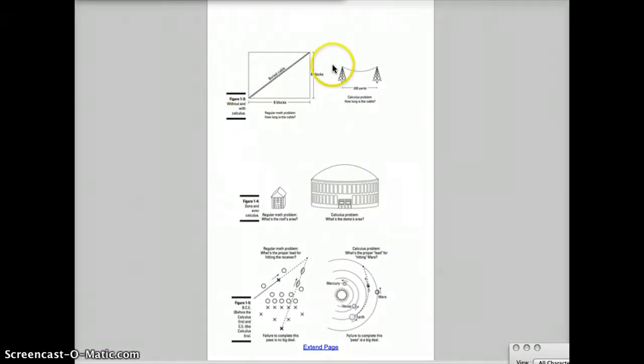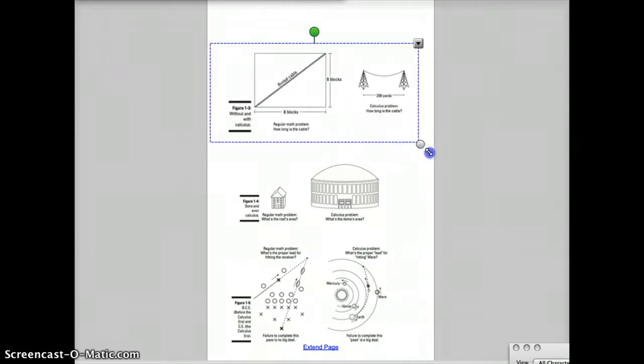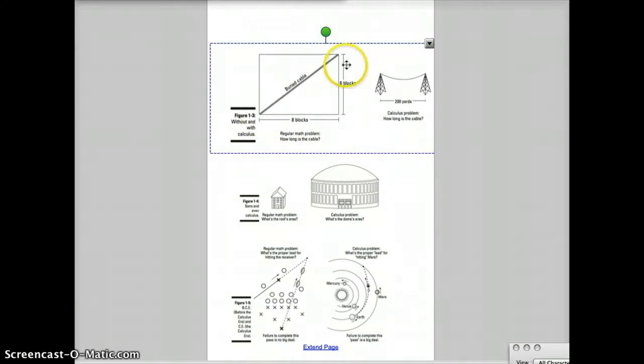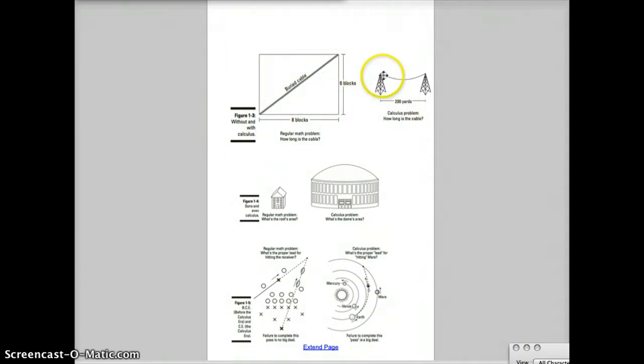Another example here is if we have this buried cable, and we want to find the length of it. If it goes eight blocks by six blocks and it goes in a straight line, hey, no problem. Without calculus, just do the Pythagorean theorem. However, if you want to find a curved wire, because not all things are buried in a straight line, if you have something above ground, it's going to make an arc like this. To figure out how long that is, that curved length is not so easy. You need calculus.